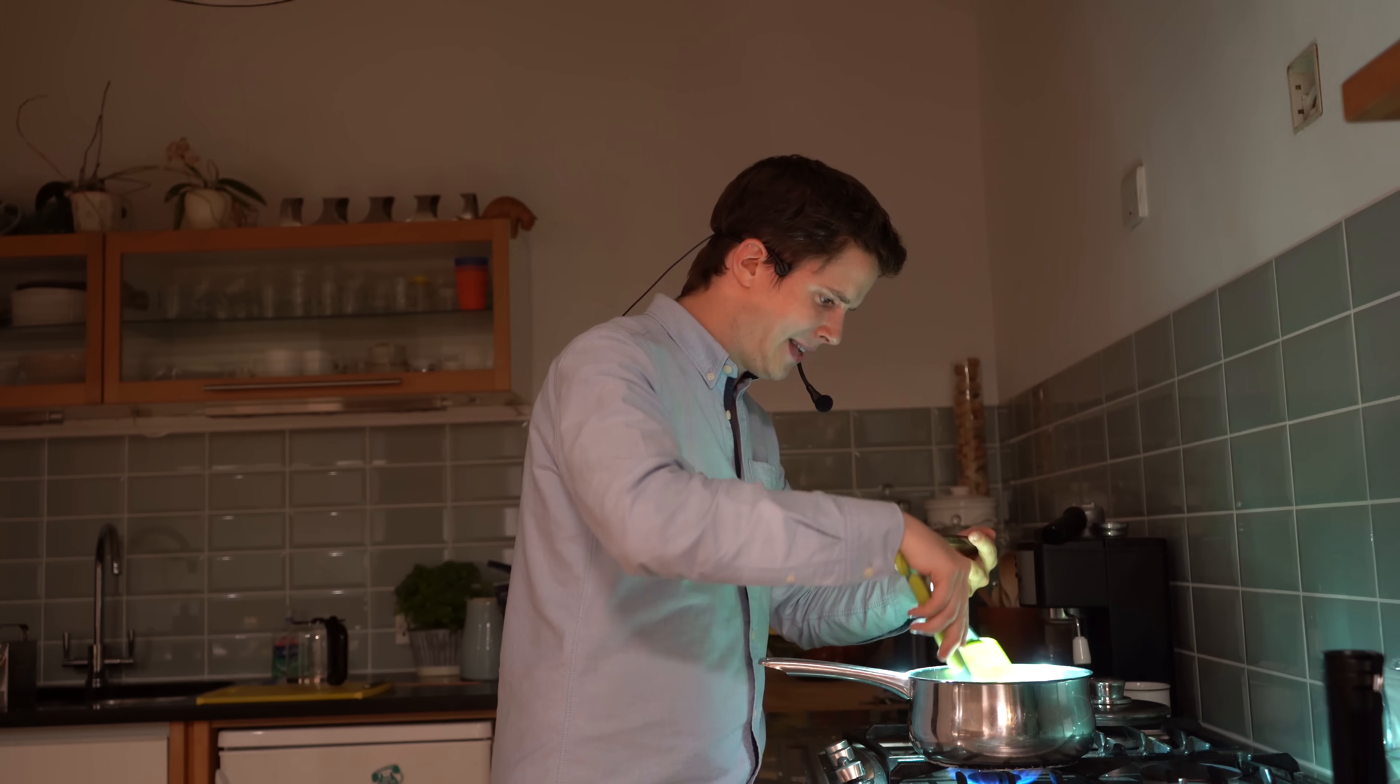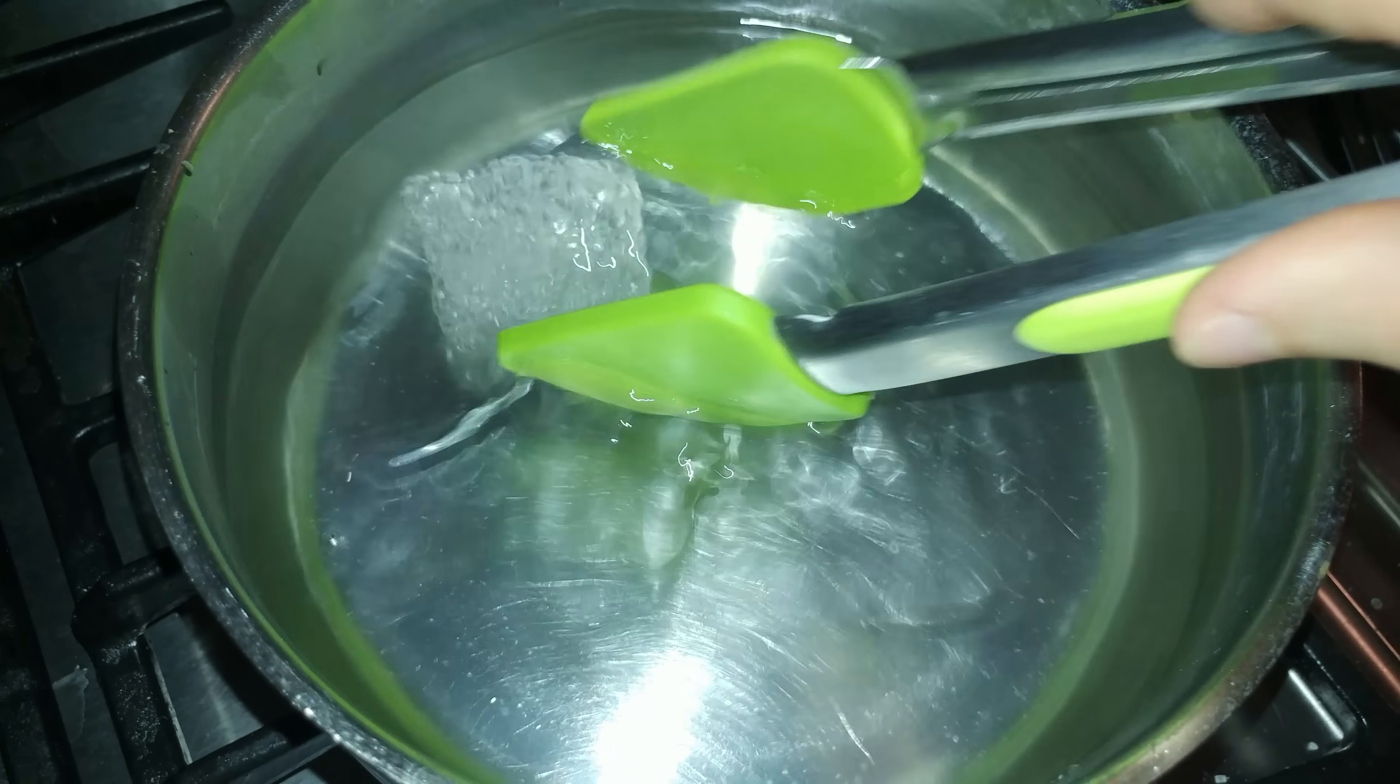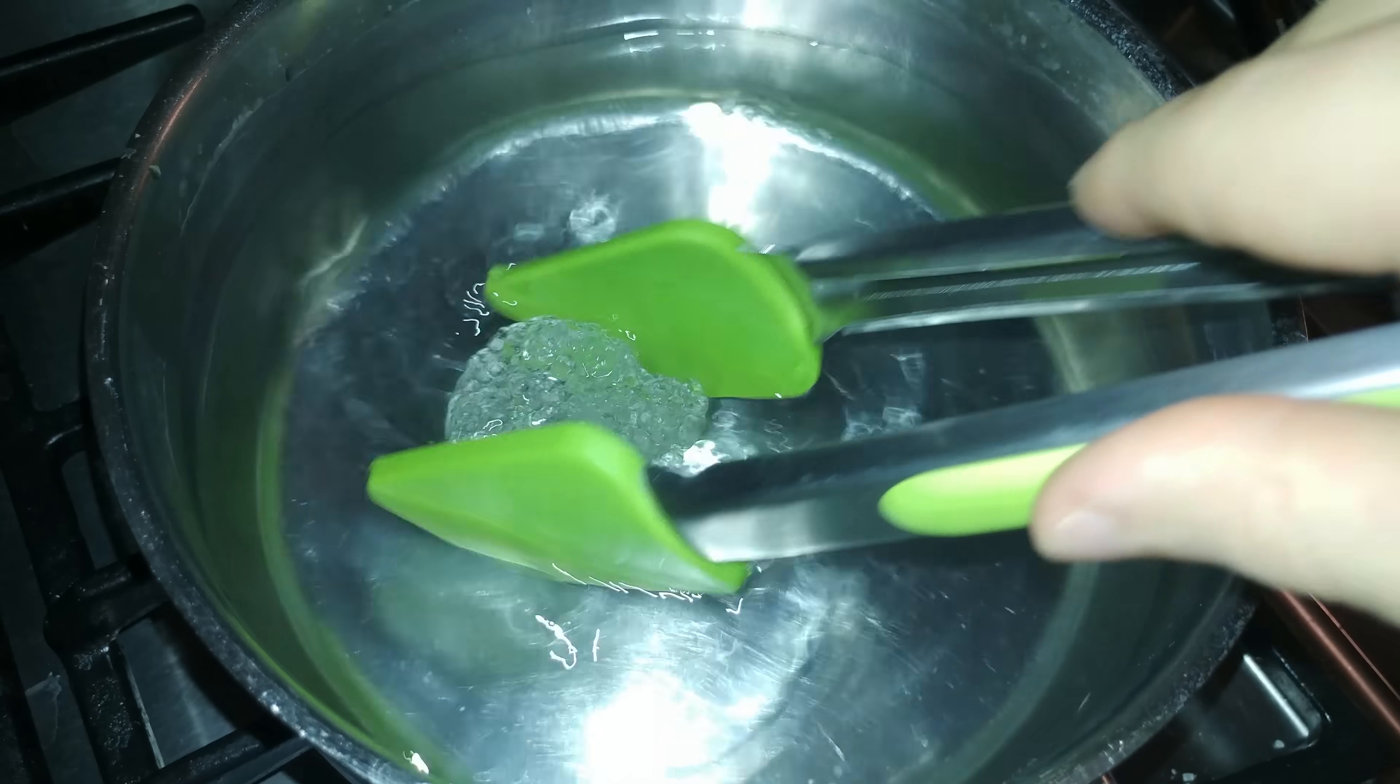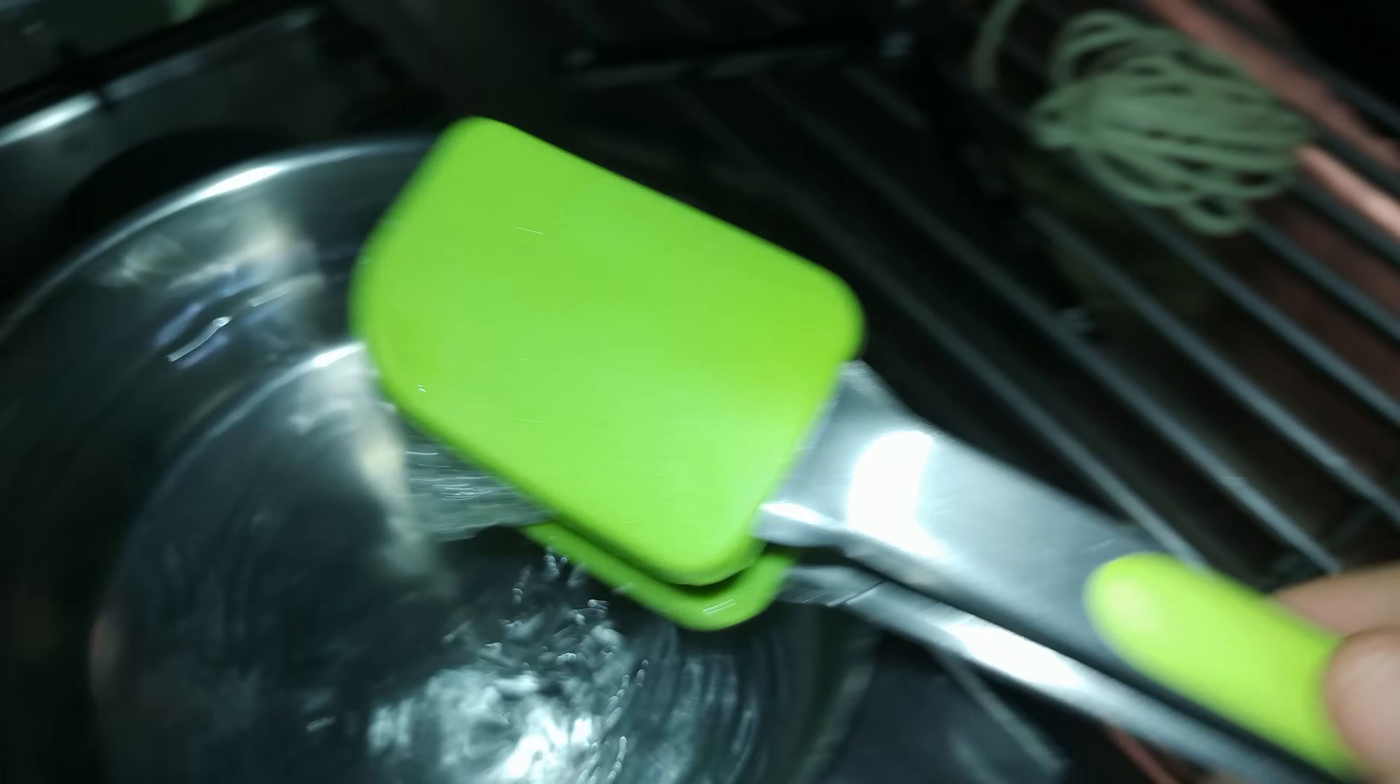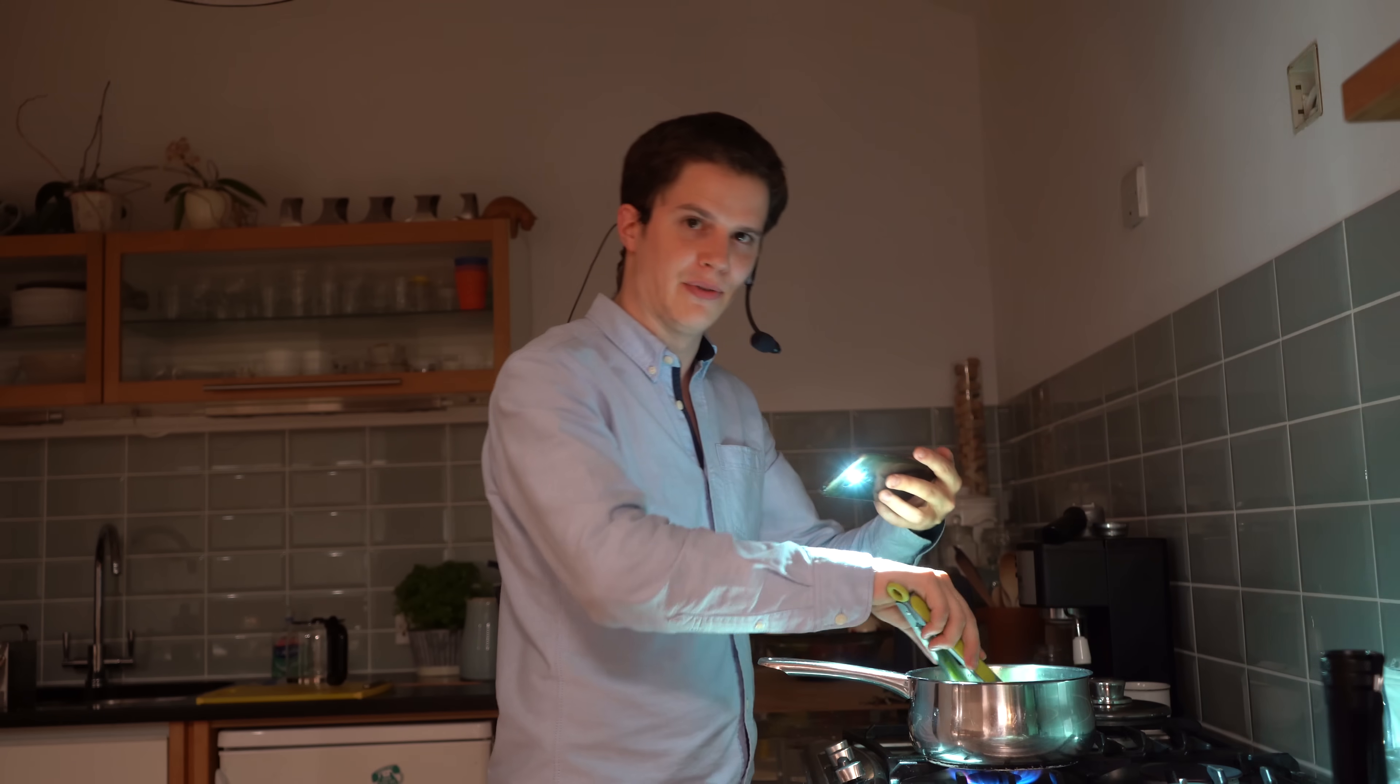So you'll notice as it gets hotter it goes kind of like ice, it goes kind of like a clear glassy color and that means that it's basically molten now and you can actually sculpt it with your fingers. It's going to be a little bit hot though, so I recommend having some cold water close by to dip your fingers in if you burn them.